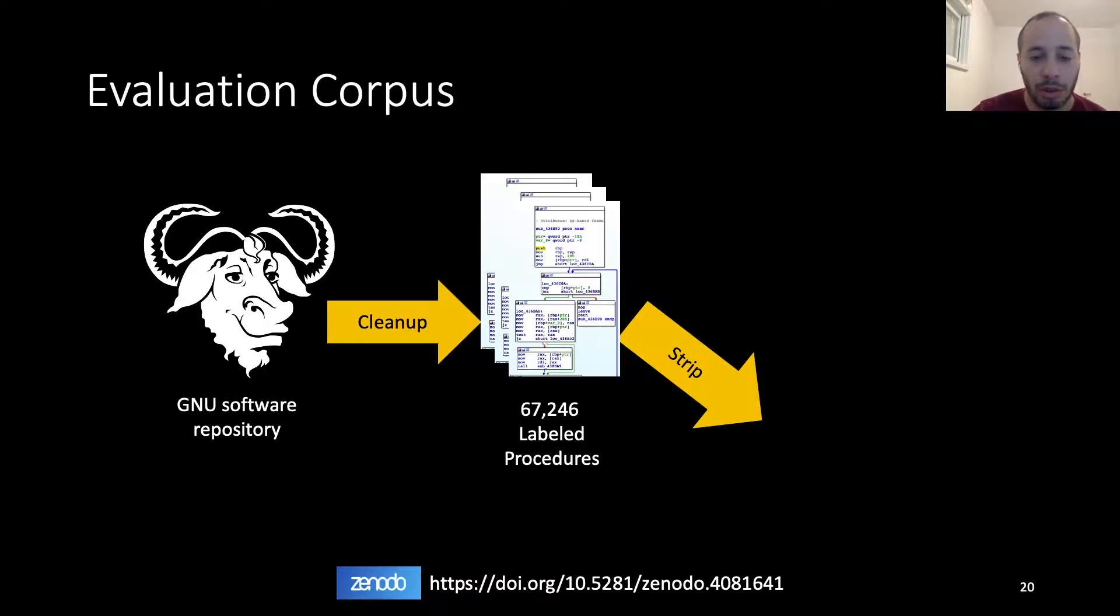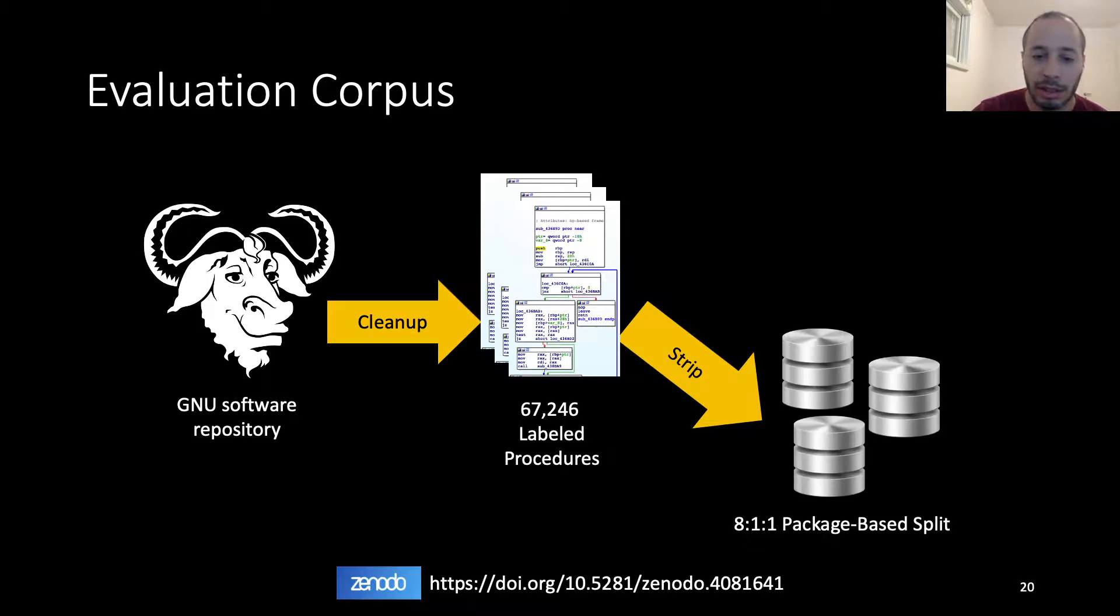Then, we stripped all the created compiled executables, and split the dataset into using an 8-1-1 split into training, validation and test using a package-based split. This means that all the executables created from a specific package will be assigned to the same set. This is important to avoid name leakage and other undesired consequences which affects the F1 scores.